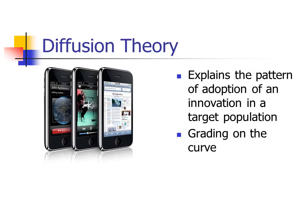Marketers pay attention to what's called diffusion theory, which represents the pattern of adoption of something in the priority population — how long does it take for something to actually get into public practice, or in terms of a tangible good, how long does it take for people to actually purchase and adopt that particular item.